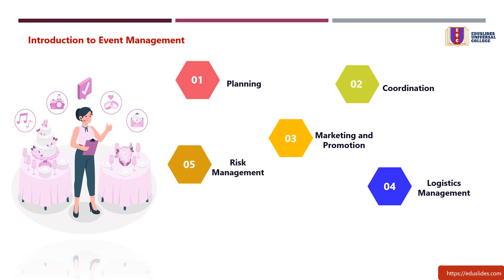5. Risk Management: Event managers need to anticipate and mitigate potential risks. This involves having contingency plans in place for unforeseen circumstances, such as technical failures, weather-related issues, or changes in the schedule.